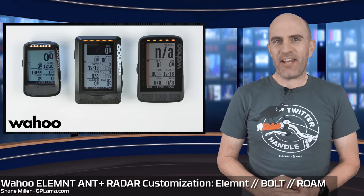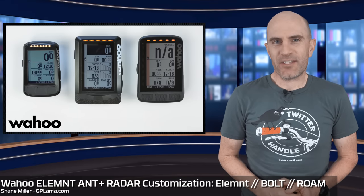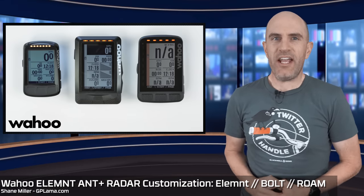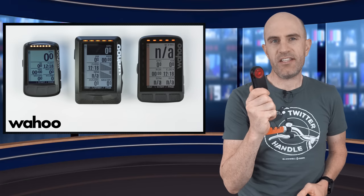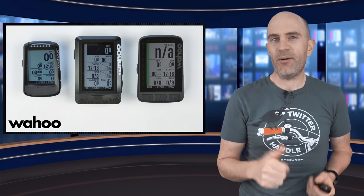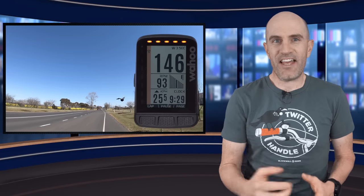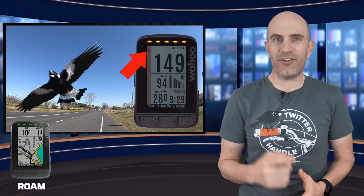With the recent release of Ant Plus radar support on the Wahoo head units, I've been outside clocking up kilometers with this thing watching my back. If you saw my video the other day with those magpie swoopings, that was a teaser about upcoming functionality which has now been released — the ability to change that icon to whatever you like on your Roam, Bolt, or Element.